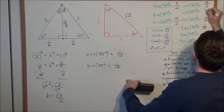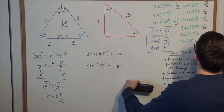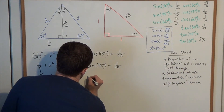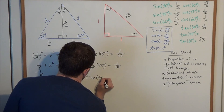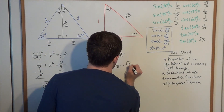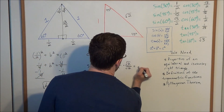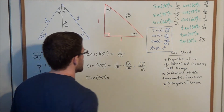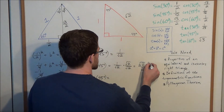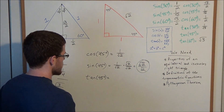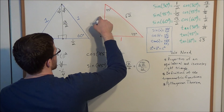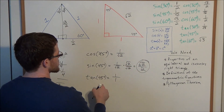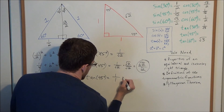We fill in these values: both sine and cosine of 45 equal one over the square root of two. Rationalizing by multiplying by the square root of two over the square root of two gives the square root of two over two, which is a popular form. For tangent of 45 degrees, opposite is one and adjacent is one, so using the definition of tangent as opposite over adjacent, tangent of 45 degrees equals one.